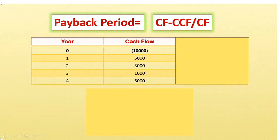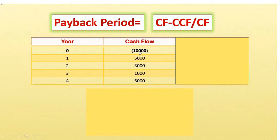Let's start with an example. We have an investment year and four inflow years. In the column you see years 0, 1, 2, 3, 4. In year zero the cash flow is (10,000) — in bracket, meaning it's negative, so it's a cash outflow of minus 10,000. Cash flows are of two types: cash inflow, when money comes into your hand, and cash outflow, when money goes out. Years 1 through 4 have inflows of 5,000, 3,000, 1,000, and 5,000 respectively — all positive, so these are cash inflows.